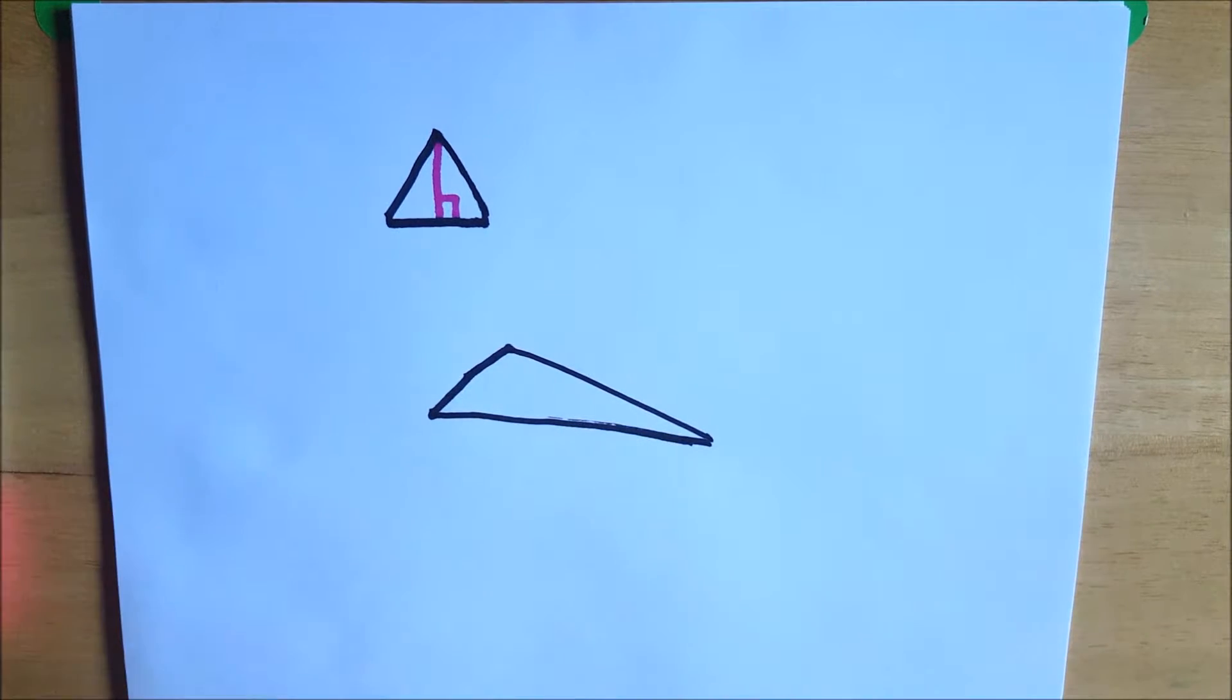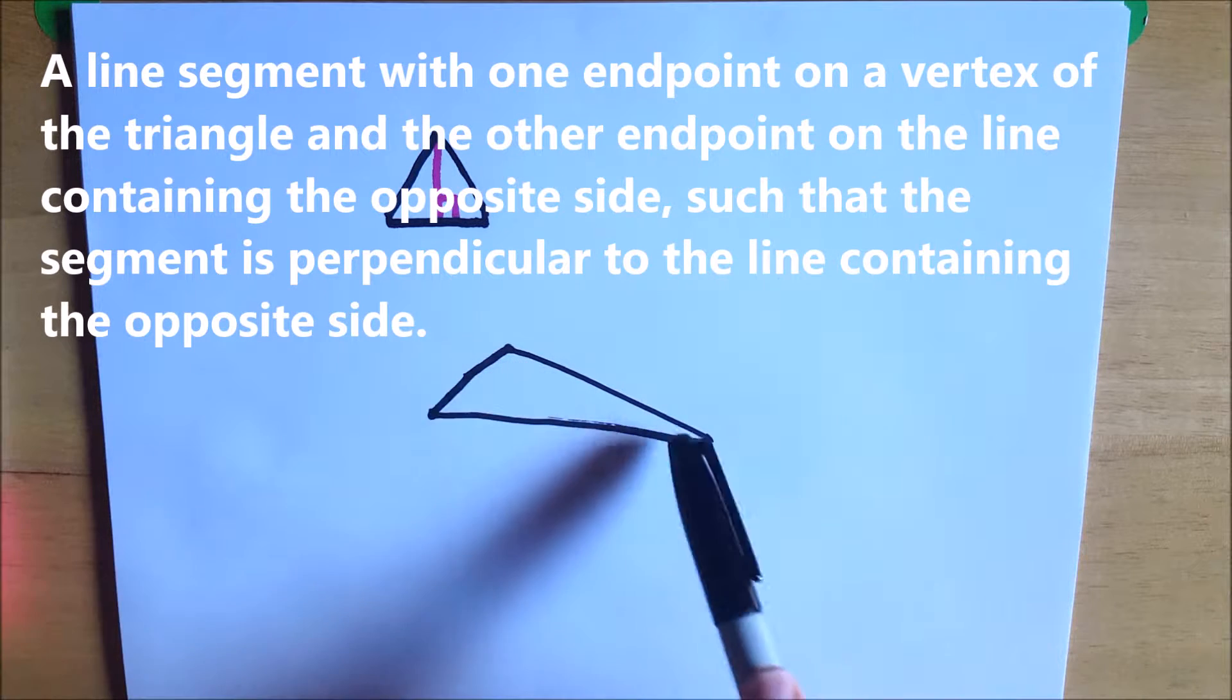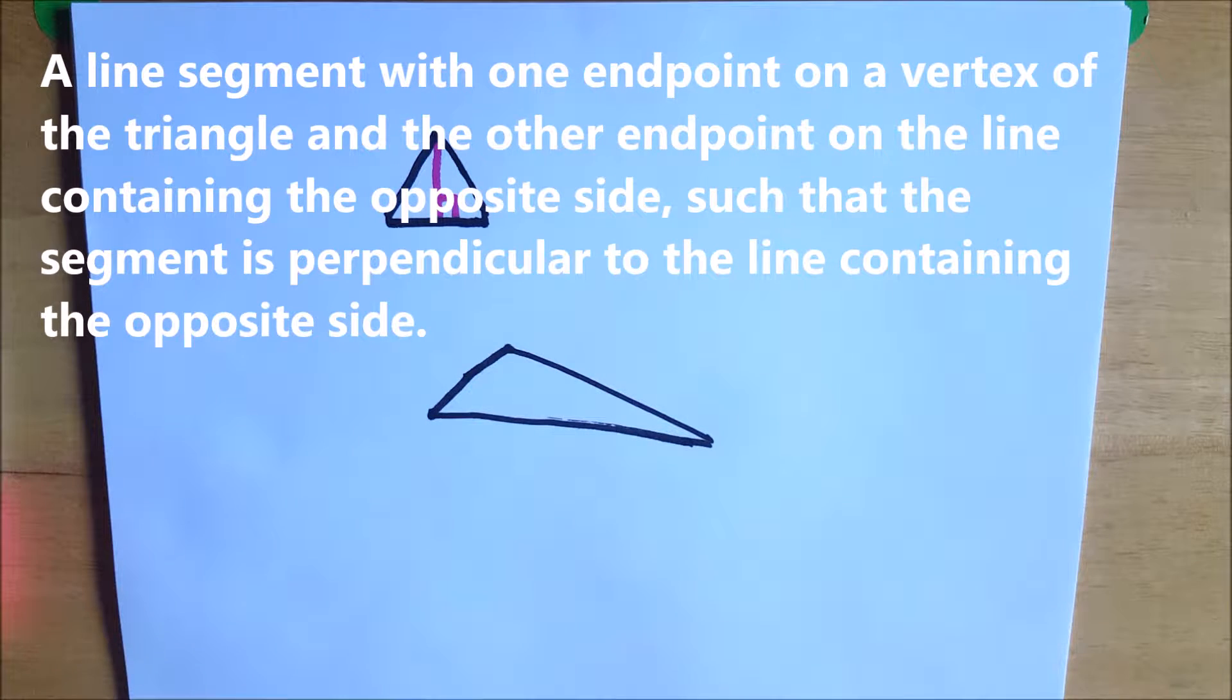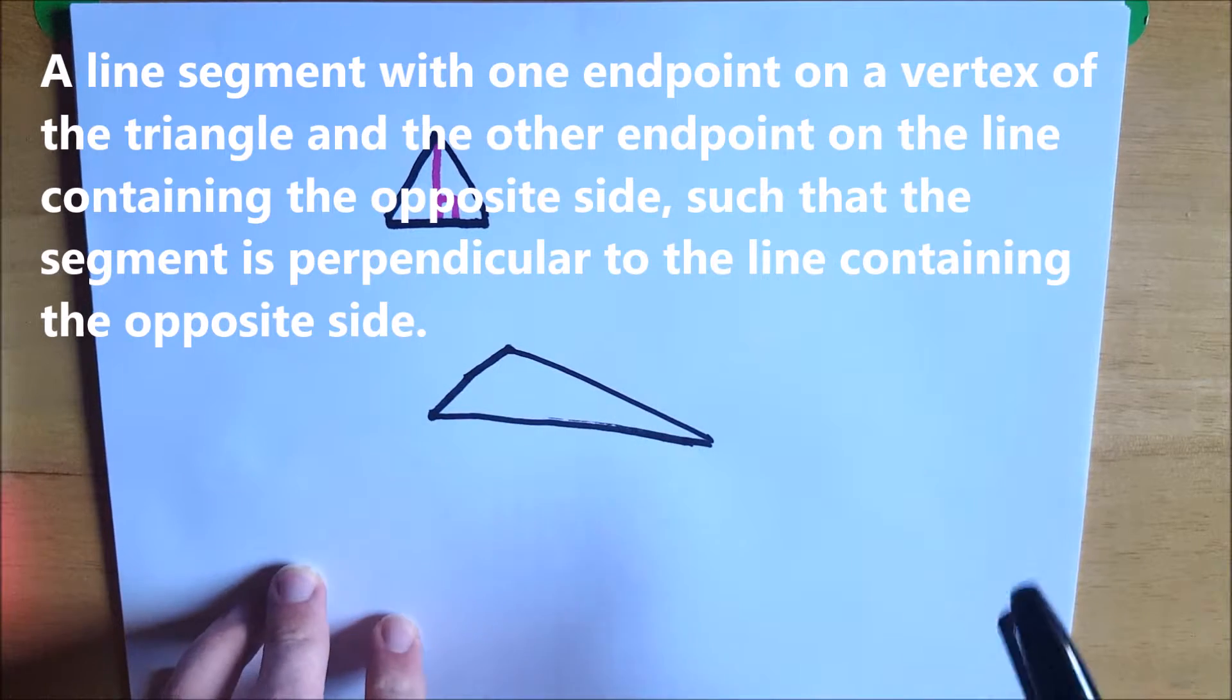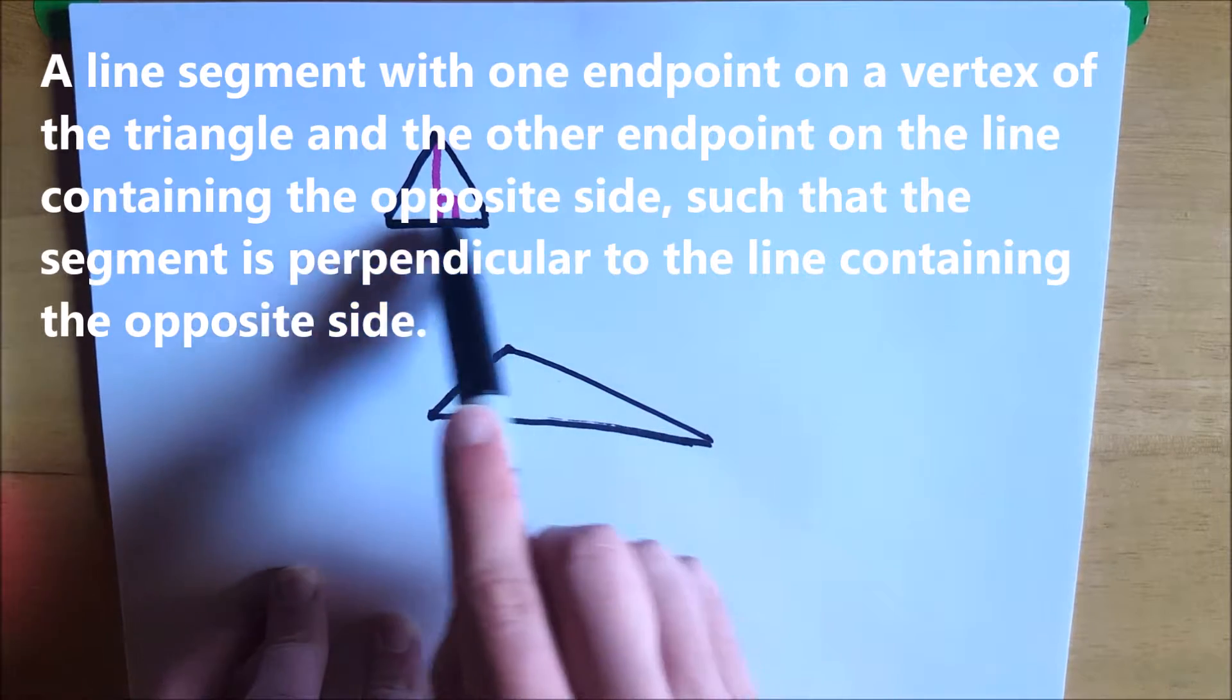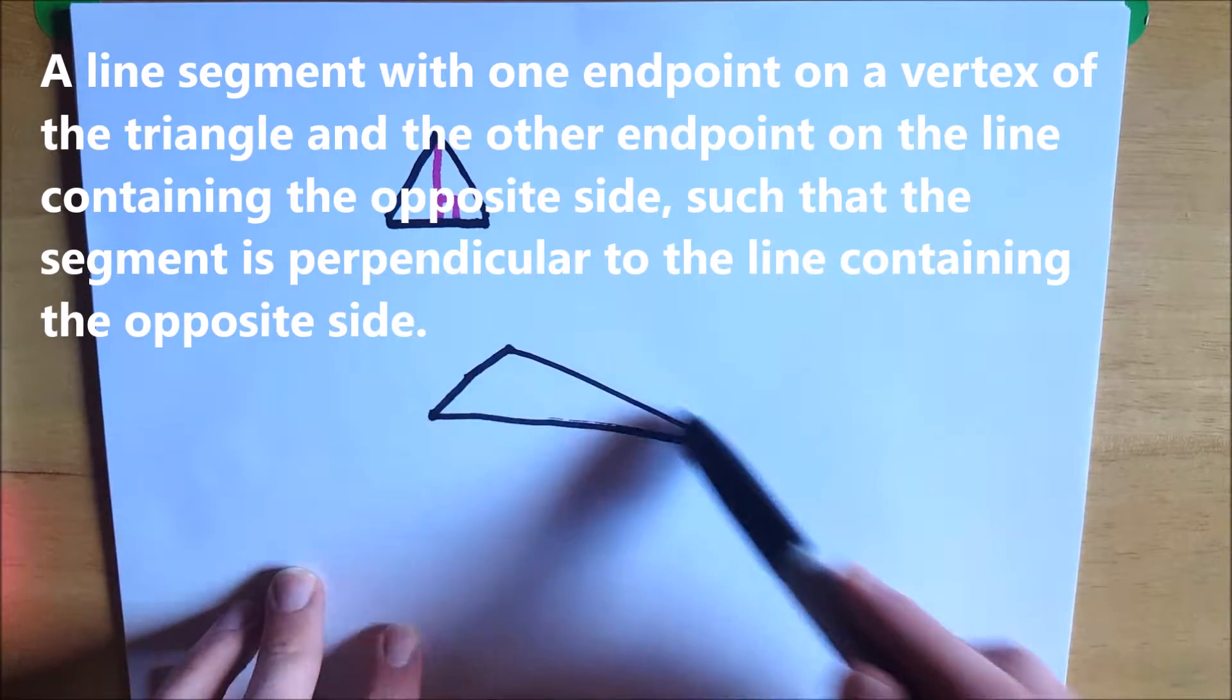So an altitude of a triangle is simply a line segment that has one endpoint on a vertex of the triangle and the other endpoint on the opposite base such that the created segment is perpendicular. And it won't always be on the opposite base. Not only can the other endpoint of the altitude be on the opposite base as it is here, but sometimes it might land on the line containing the base.